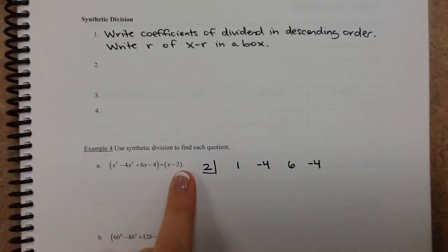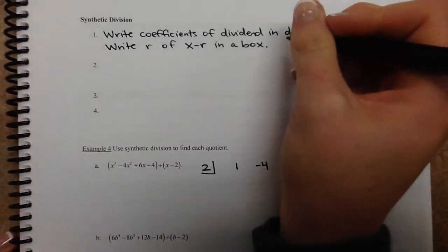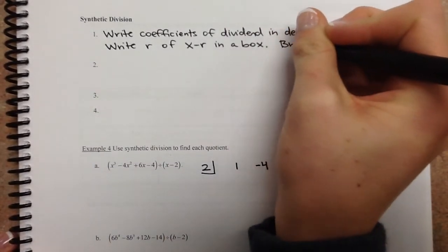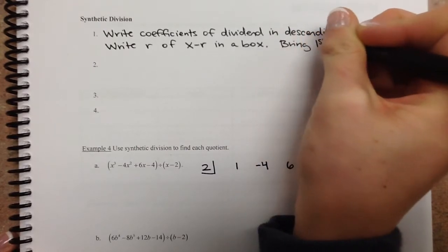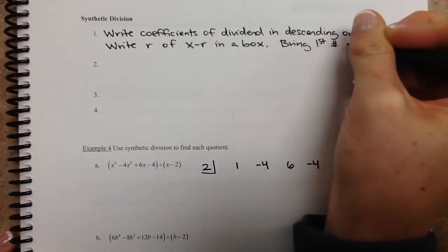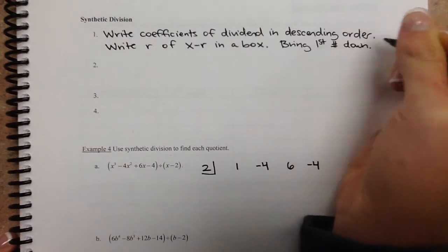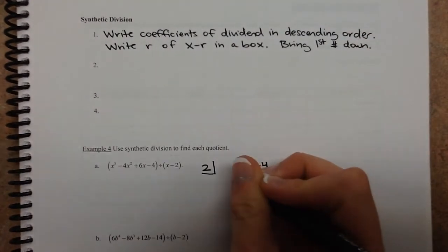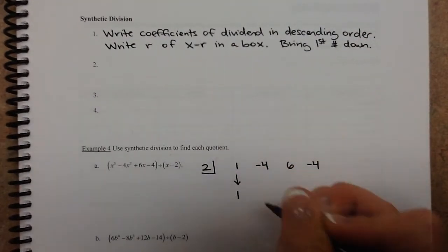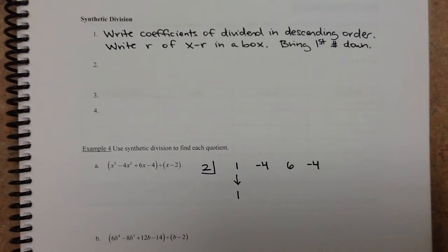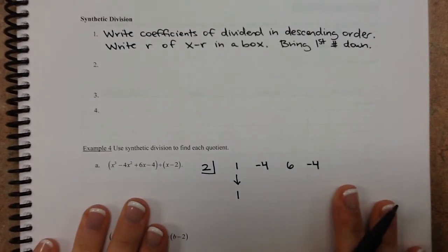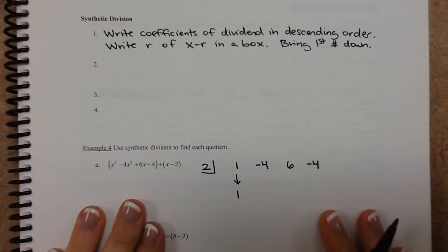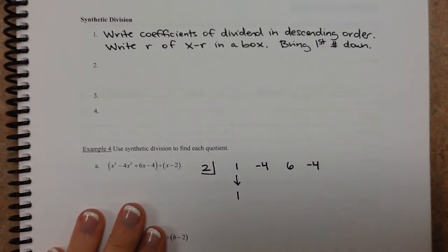And then the last part of the first step is to bring the first coefficient down. So this 1 just gets a free pass down like that. So this is the setup. It's going to look a little bit crazy. Once we get going, I think you'll get the hang of it.